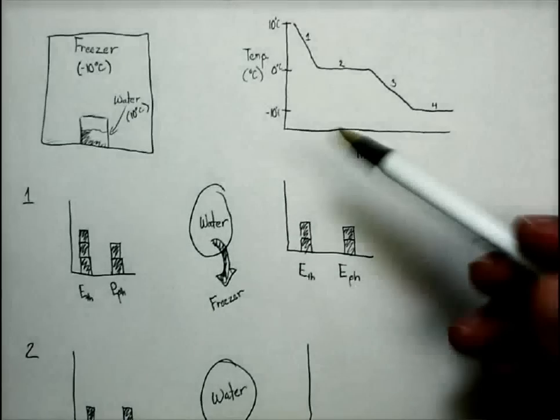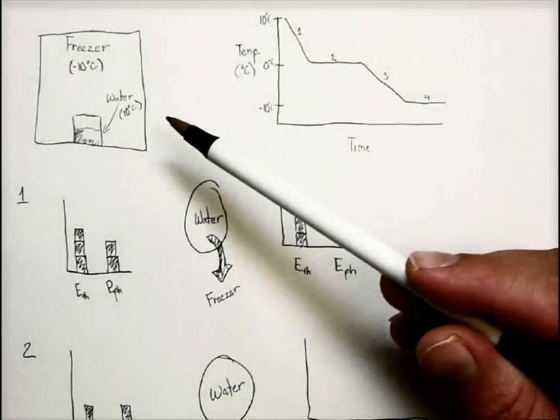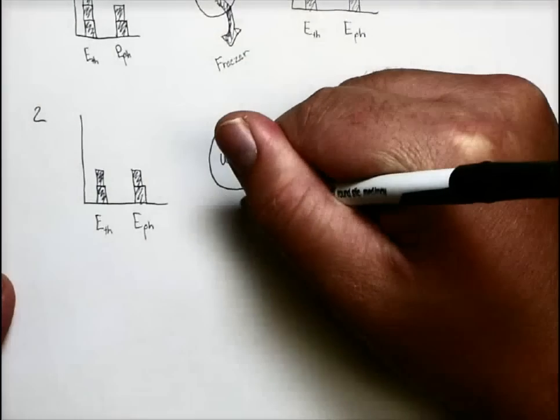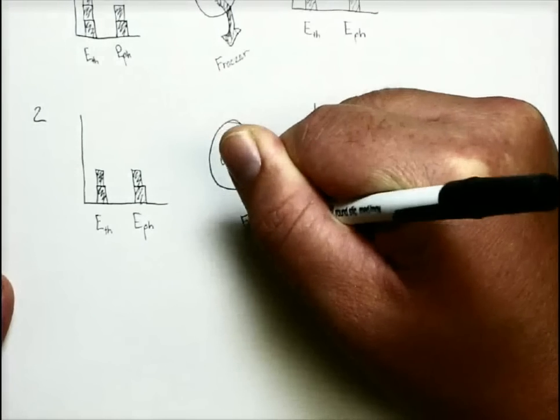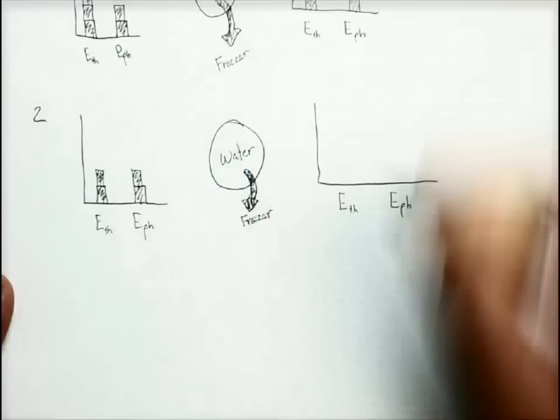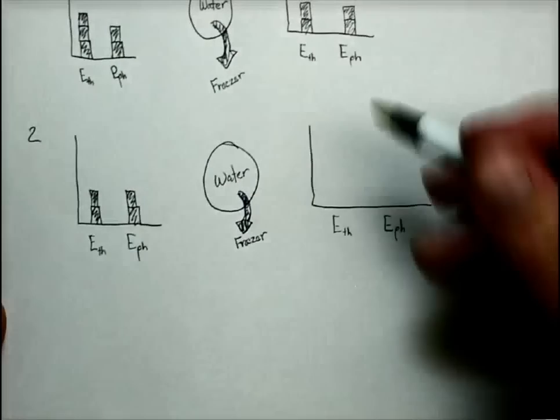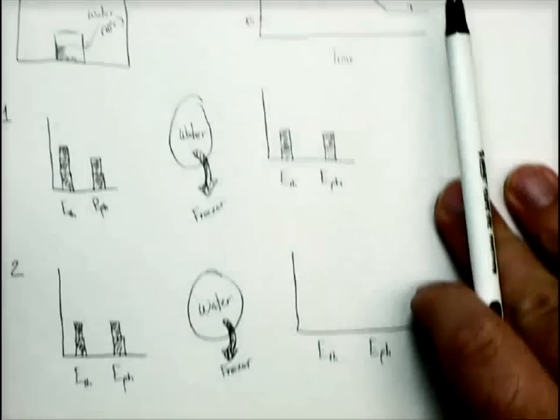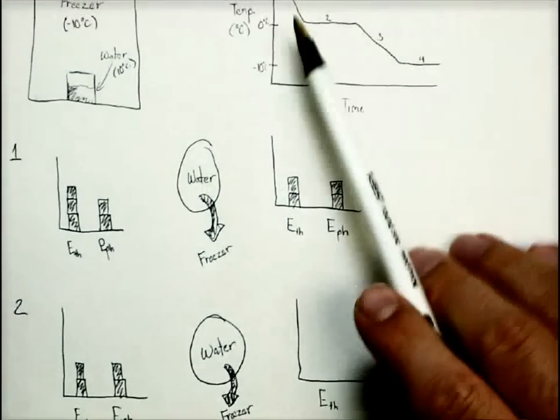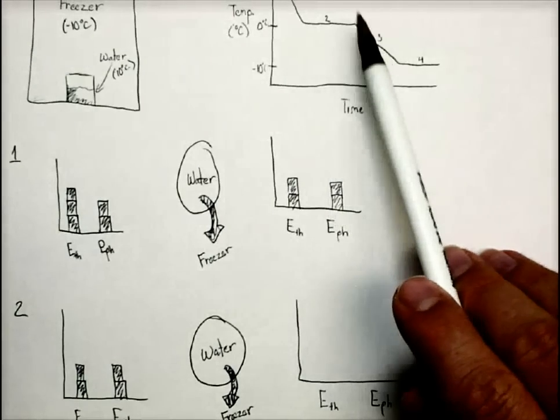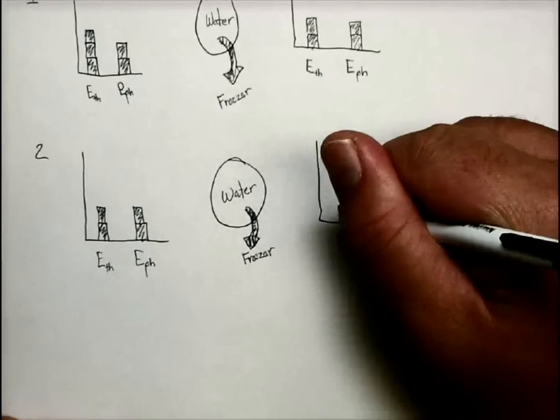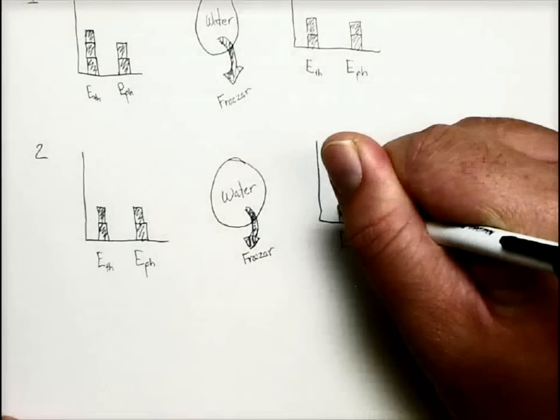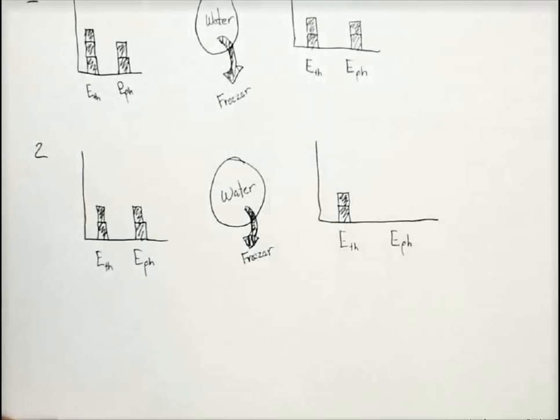Now, it's still not as cold, even though the water is down to 0 degrees now. The freezer is still colder. So we're still going to lose energy on this. And that energy is still going to the freezer, just like that. But now, notice if we look at our graph, the temperature at section 2 is not changing, which means the amount of thermal energy is not changing.